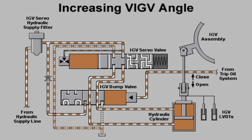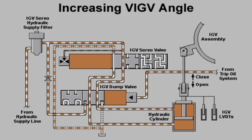If the VIGV operating sequence requires a greater variable inlet guide vane angle, the control system will shift the spool valve of the IGV servo valve to a position which allows hydraulic fluid to flow to the upper section of the hydraulic cylinder. Hydraulic fluid from the lower section of the hydraulic cylinder is dumped to drain.